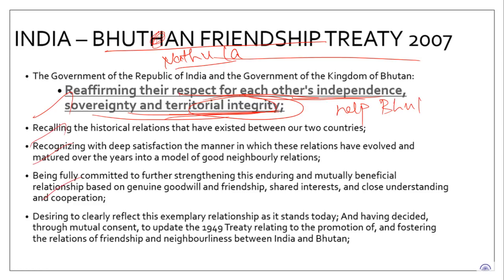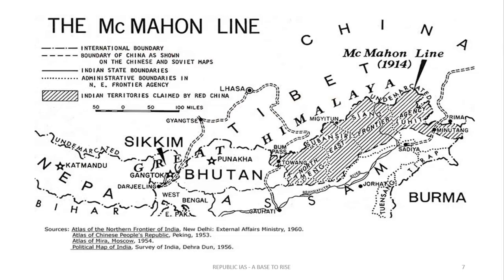The third important zone of border dispute with respect to China is Arunachal Pradesh. Here you need to know about the McMahon line. The Simla Accord happened in 1914.